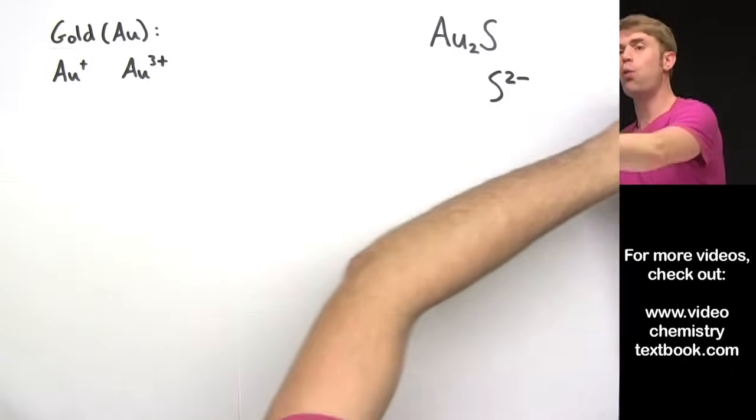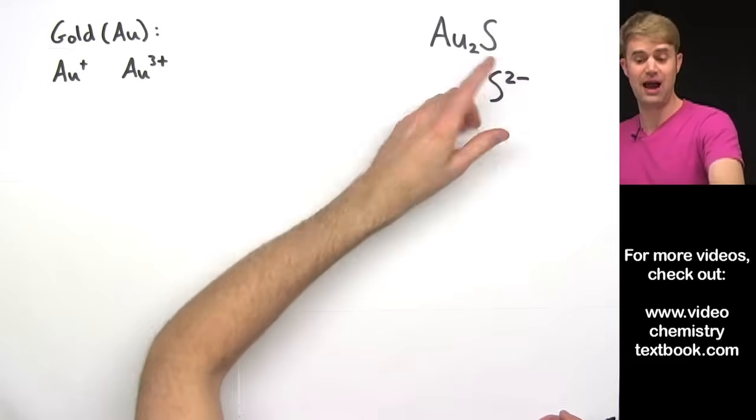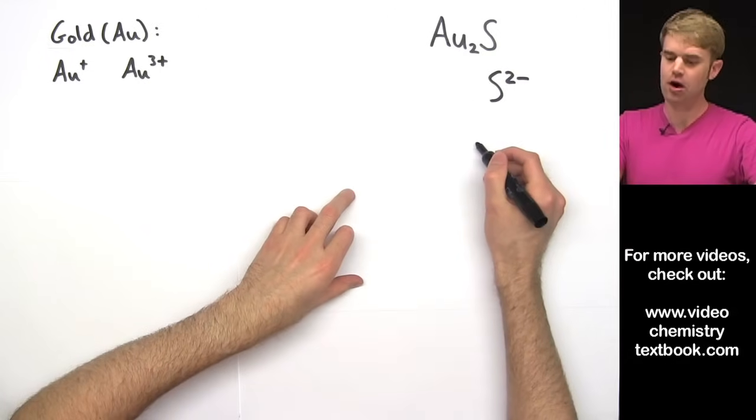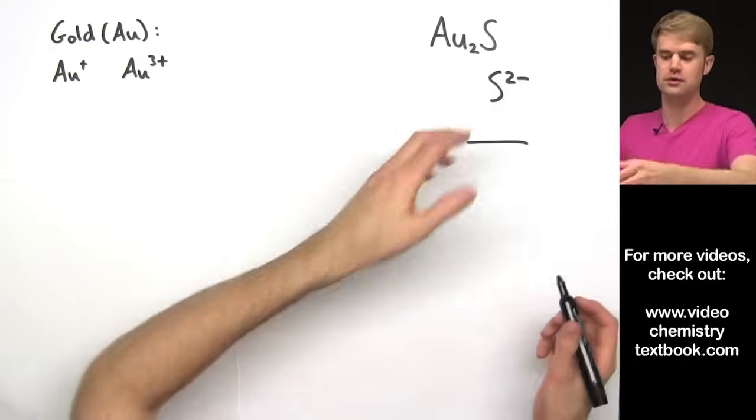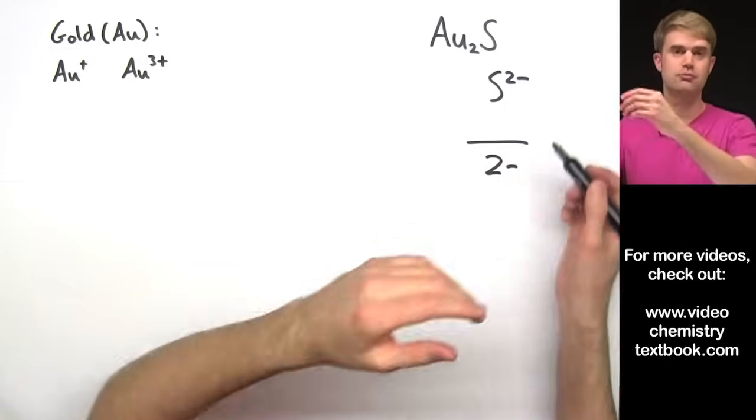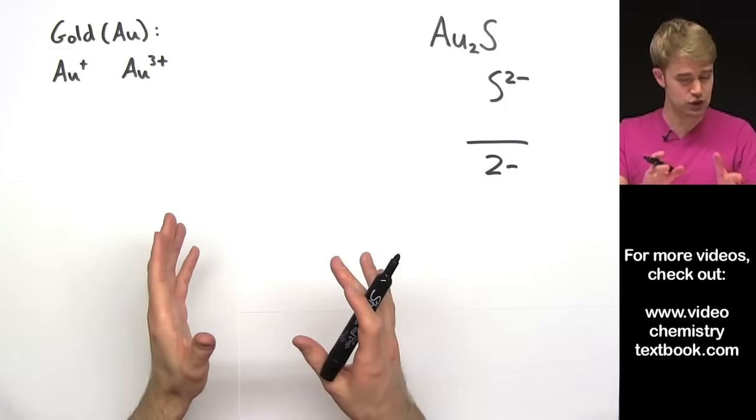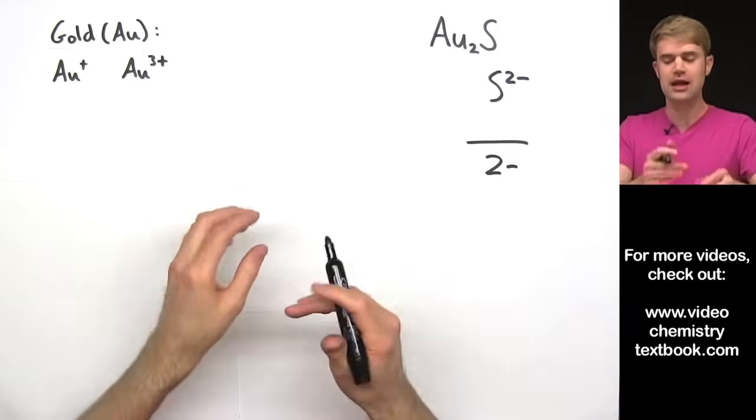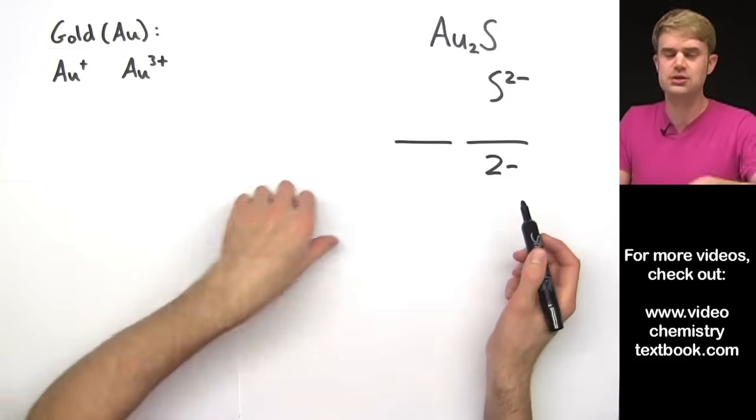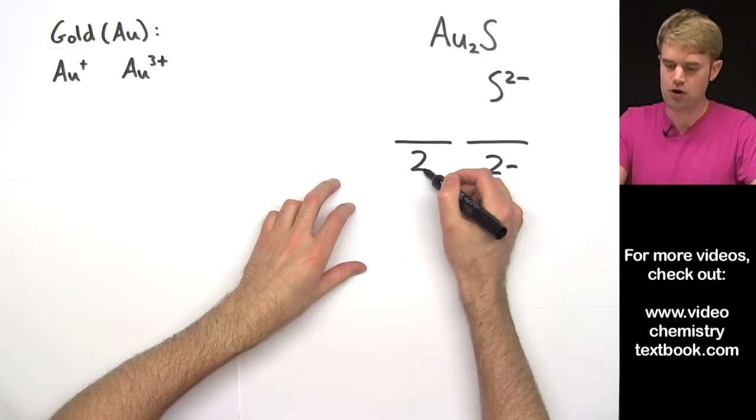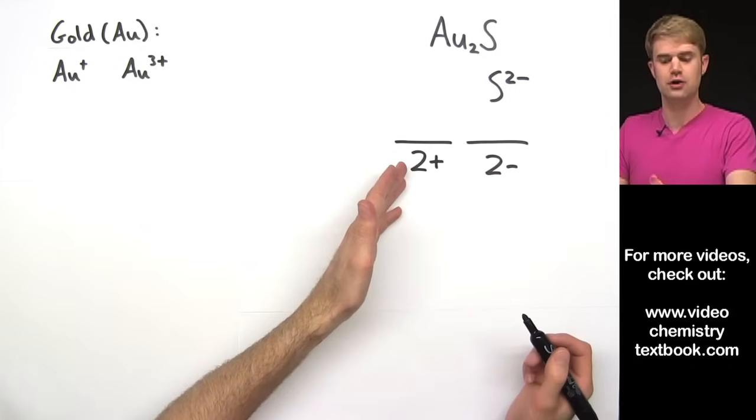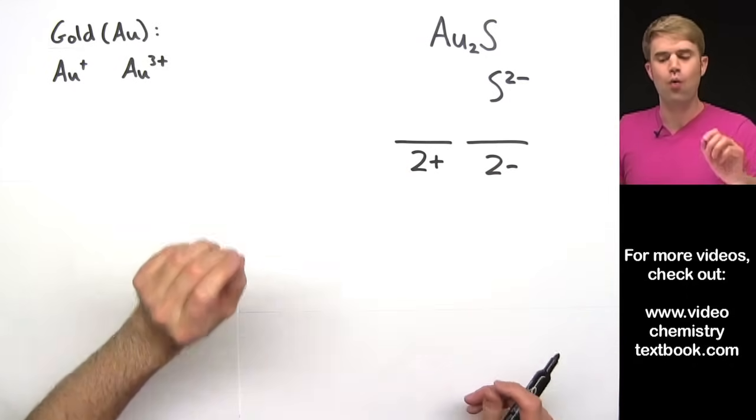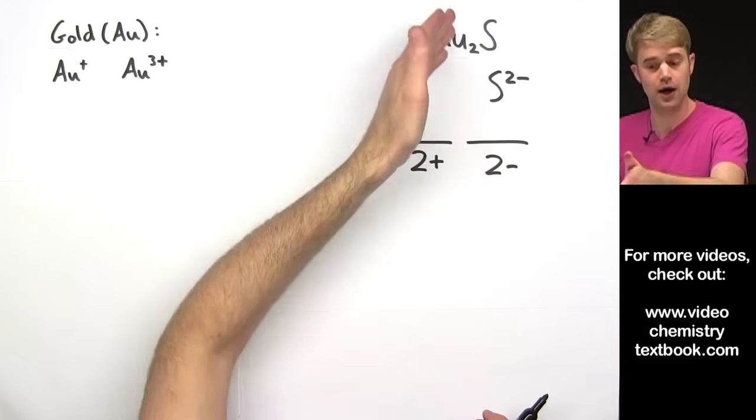So here we've got S2-. Now, there's only one S. There's no number after that S. So that means that our total negative charge in the compound is 2- from this 1 S2- here. Now for the positive charge, the positive and the negative has to balance, so that means that over on this side, we have to have 2+ of positive charge.